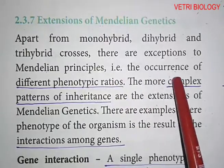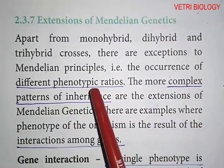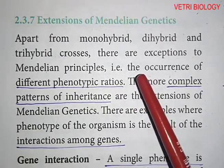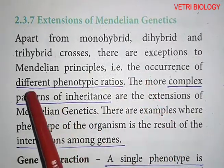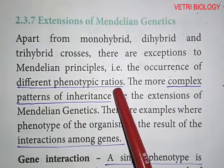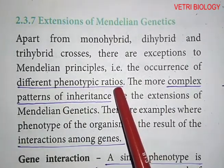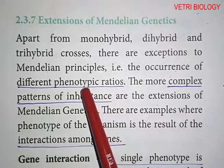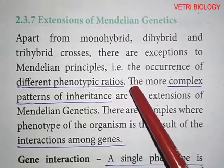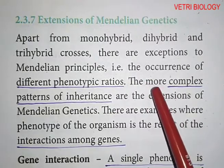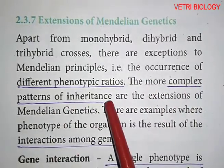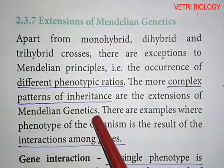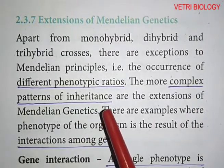That is, the occurrence of different phenotypic ratios. There are some exceptions in Mendelian principles, in which different phenotypic ratios are formed. The more complex patterns of inheritance are the extensions of Mendelian genetics — they are the complex patterns of inheritance.